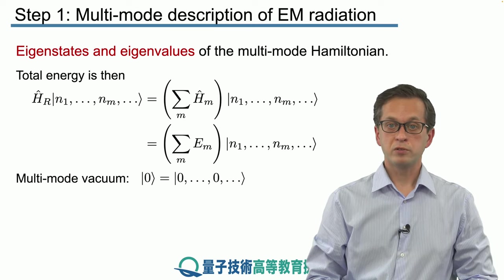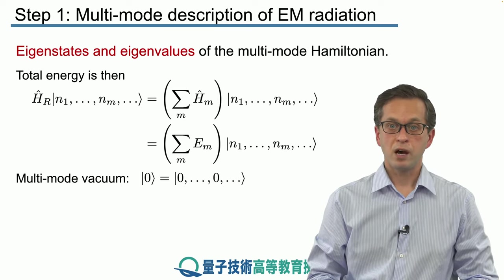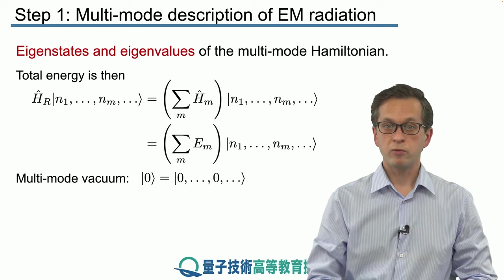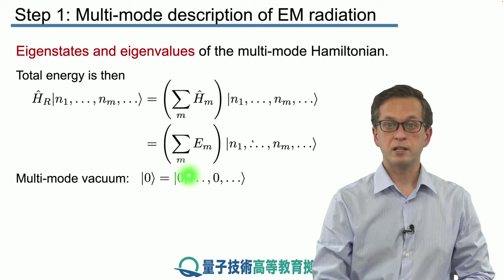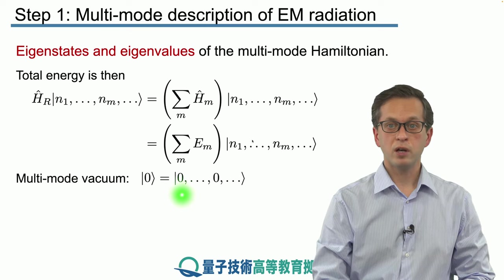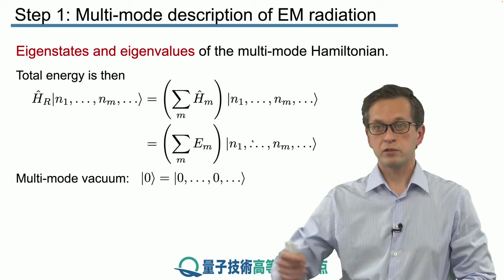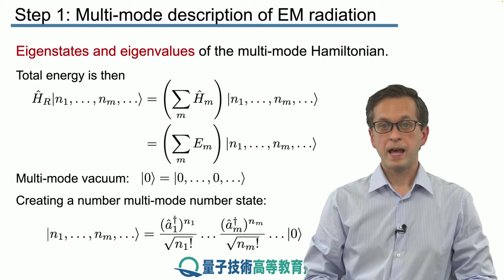The vacuum, we also denote by simple ket 0. However, now we are in the multimode case, so really when we write ket 0, what we mean is that we've got zero photons in mode 1, zero photons in mode 2, and so on.